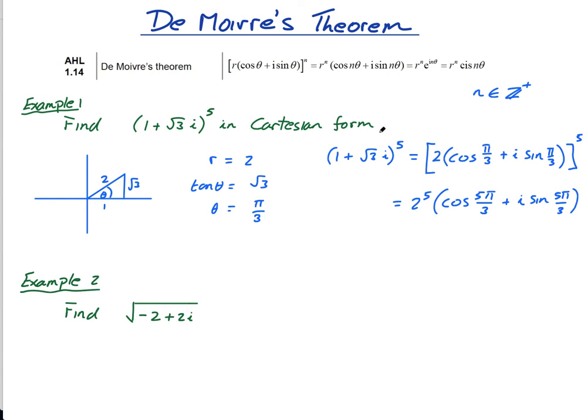Now, obviously, he said write it in Cartesian form, so I need to now go backwards. I could have used the binomial expansion there and multiplied it out. But this is a much quicker way, especially if this was much bigger than 5. Imagine if this was 25, then the last thing you want to be doing is the binomial expansion. This actually works out quite nicely.